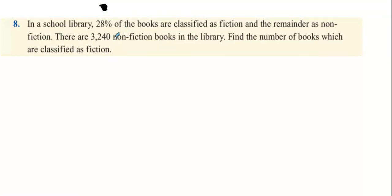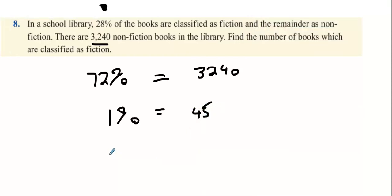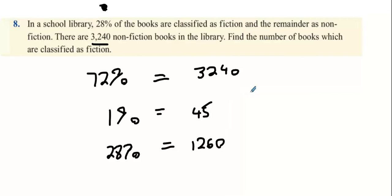In a school library, 28% of the books are fiction and the remainder are non-fiction. There are 3,240 non-fiction books. So 72% equals 3,240. Find out what 1% is: 3,240 divided by 72, which is 45 books. Then 28% will be 45 multiplied by 28, which equals 1,260.